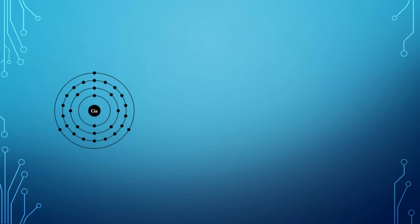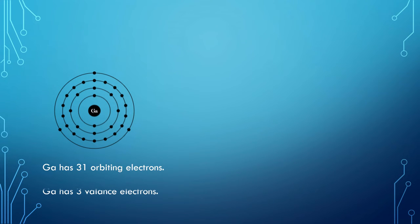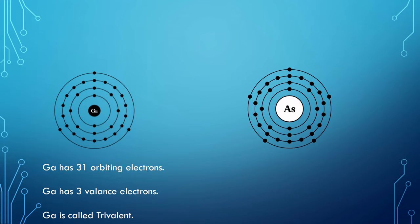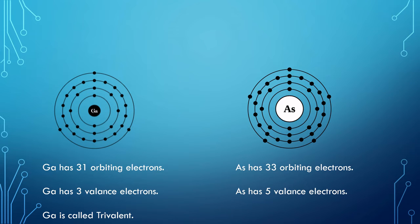The Bohr model structure for gallium shows it has 31 orbiting electrons. It has 3 valency electrons in the outermost shell. Next, the Bohr model for arsenic shows it has 33 orbiting electrons. Arsenic has 5 valency electrons in the outermost shell.